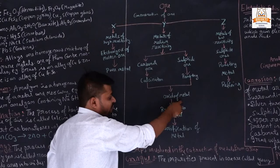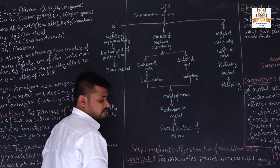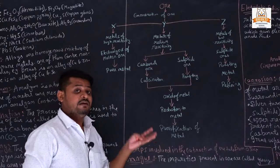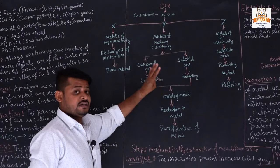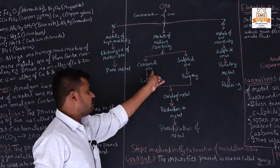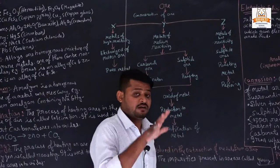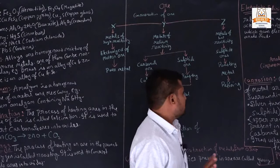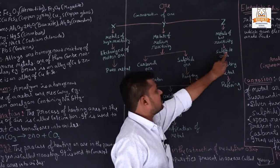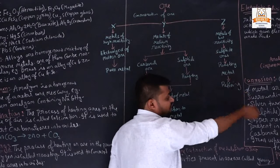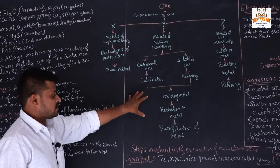For metals of low reactivity, which are mostly found in a free state, if some are not found free they are mostly in sulphide ore. We apply roasting, then refine the metal to get a pure metal. These are the steps and the chart involving the extraction of metal from its ore.